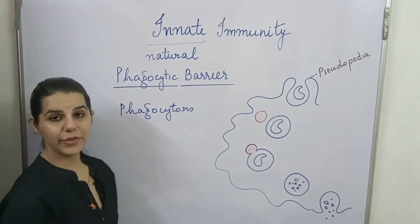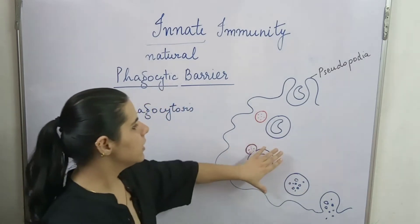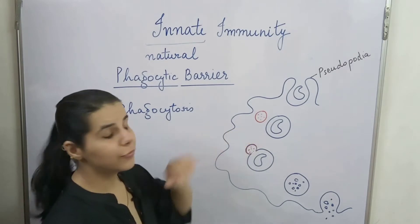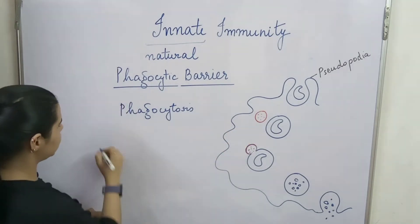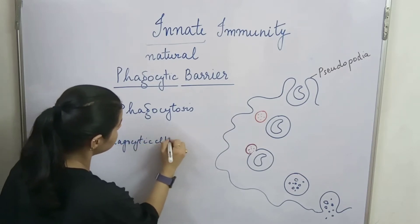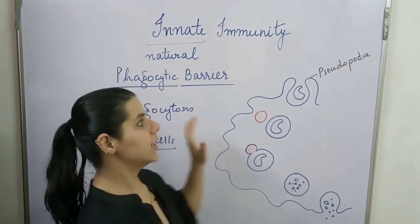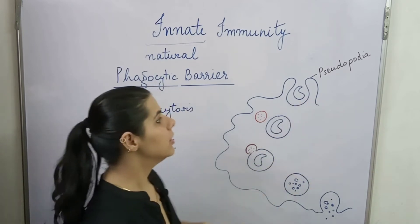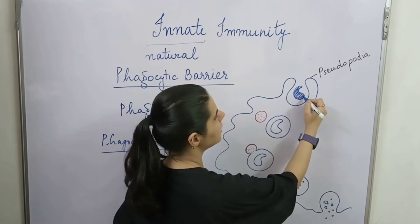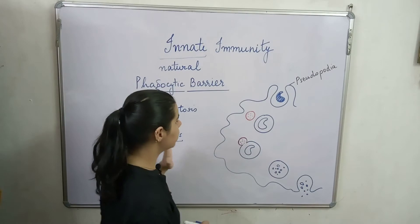Phagocytosis is a type of endocytosis — 'endo' means inside, so the pathogen goes inside the cell. Here we have our macrophage or neutrophils; these are the phagocytic cells where phagocytosis happens. This is our pathogen, which will be engulfed inside the cell.